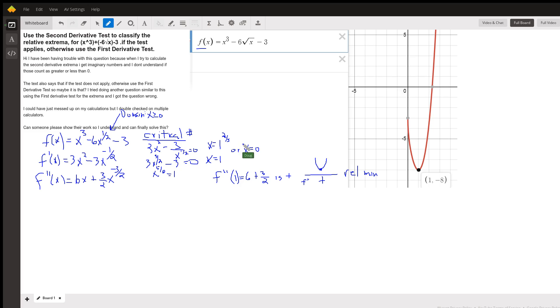So x equals 0 is also a critical number. But if we multiply through by x to the 1 half to clear the equation of fractions, we'll get 3x to the 5 halves minus 3 equals 0. Add 3 to both sides, and then divide by 3. We get x to the 5 halves equal 1. To isolate x, we raise both sides to the 2 fifths power. But 1 to the 2 fifths is just 1. So there's your critical number.